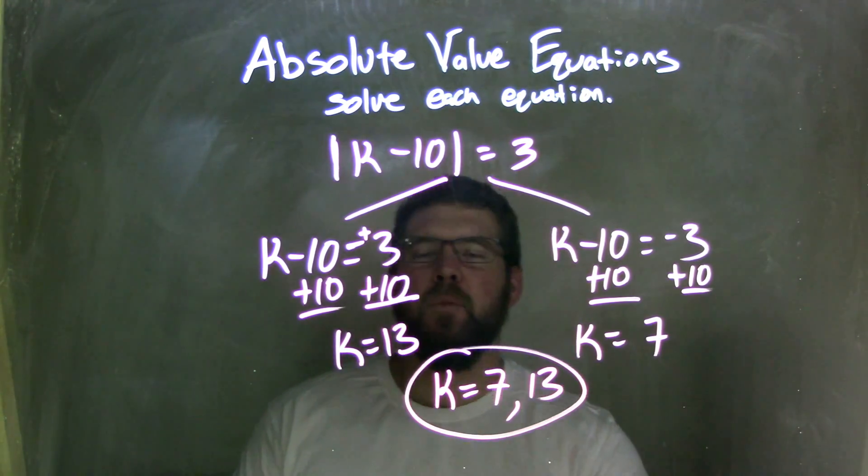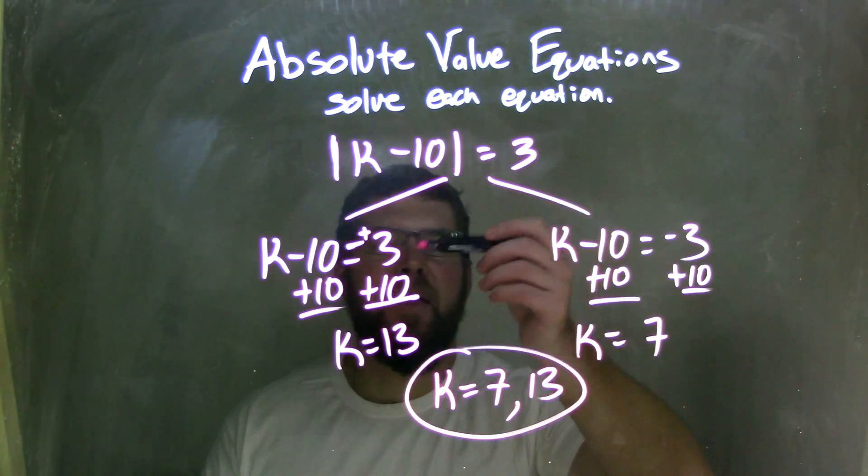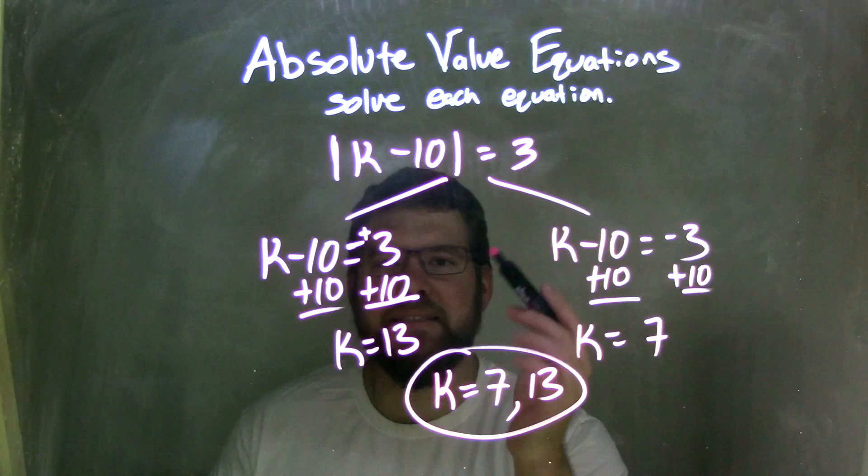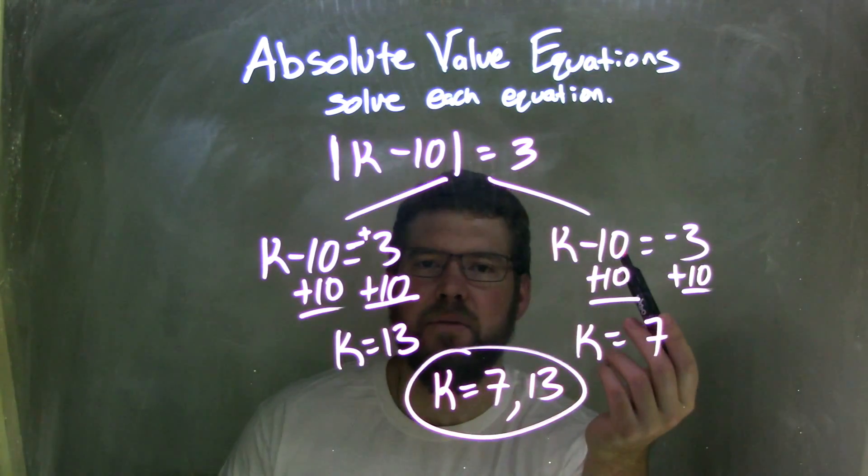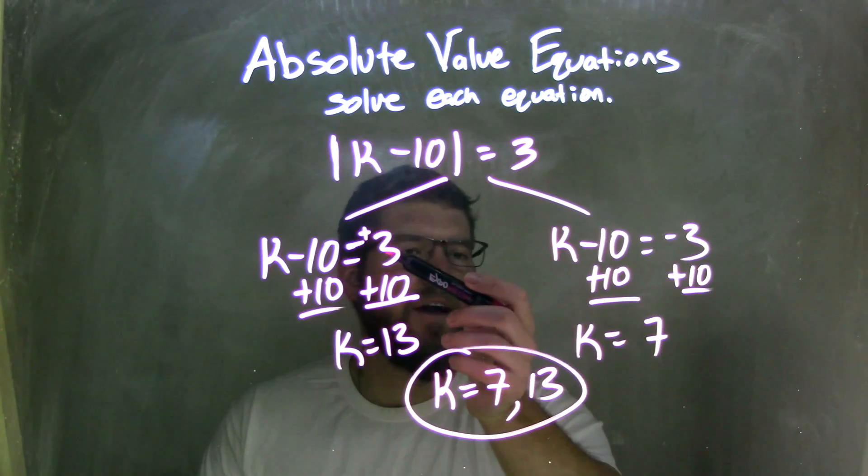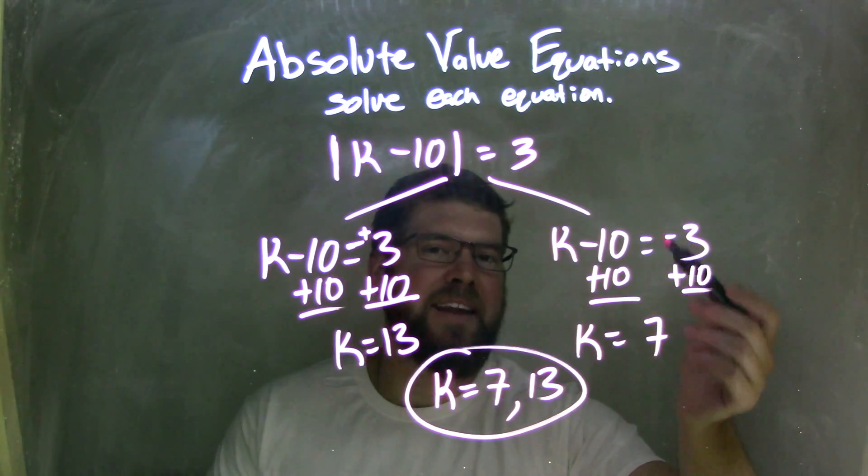So let's recap. We started with the absolute value of k minus 10 and then equals 3. Well, since the absolute value is already isolated, I can separate the equations. I separated them to be k minus 10 equals, on the left side, positive 3, and the right side, negative 3.